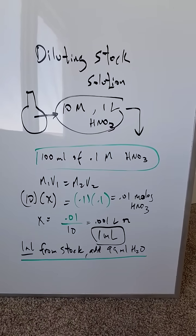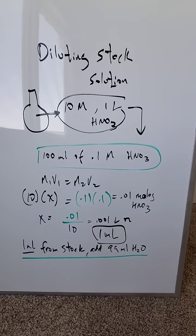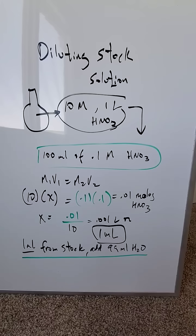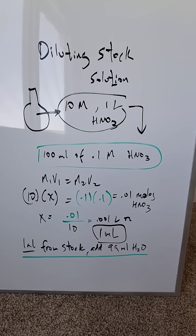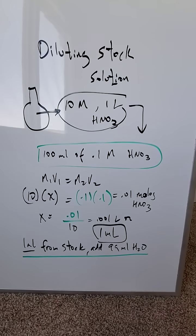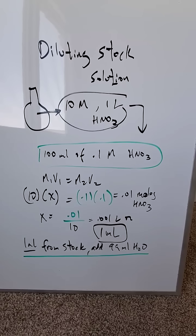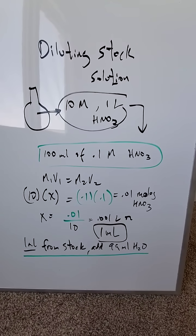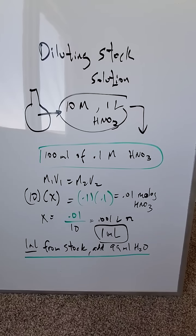Let's talk about diluting a stock solution, which is frequently what's needed for experiments. We have a flask over here with heavily concentrated nitric acid — it's 10 molar, 1 liter of nitric acid. But what you need is really 100 milliliters of 0.1 molar nitric acid. How can you generate that from a stock solution?